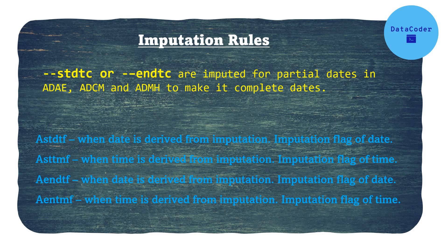First, let's understand what imputation is. Dates are mostly imputed in Adverse Event, Concomitant Medication, and Medical History for start dates and end dates, because these dates are collected based on the memory of the subject. How much the subject remembers, they tell the dates, and based on that the data is entered into the database. For example, they may remember complete dates, only the month or year, only the day and year, or sometimes they may not remember the complete date at all. In SDTM it is kept as-is, but in ADaM we impute it — we make the partial date into a complete date.